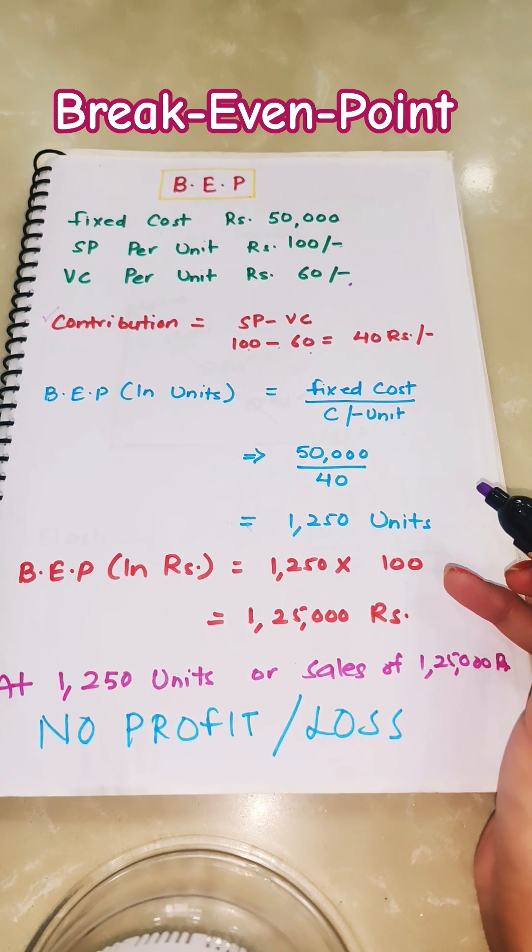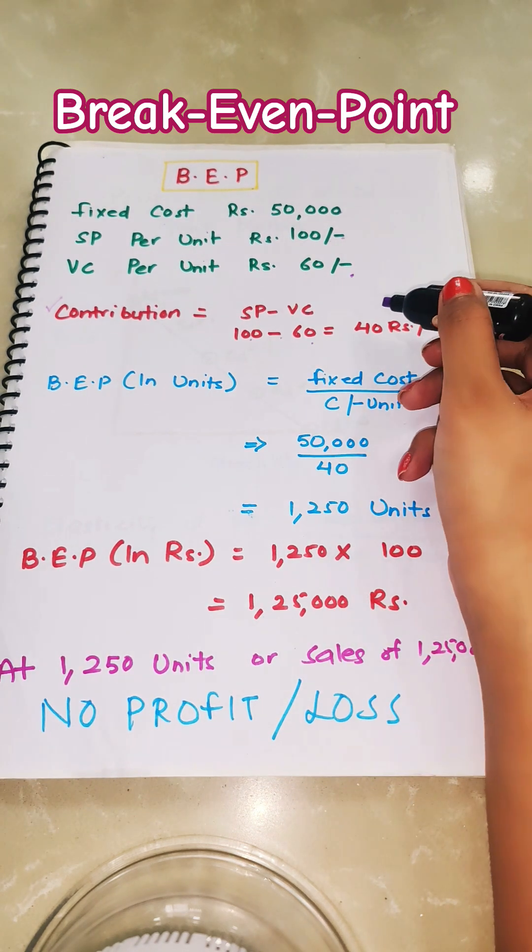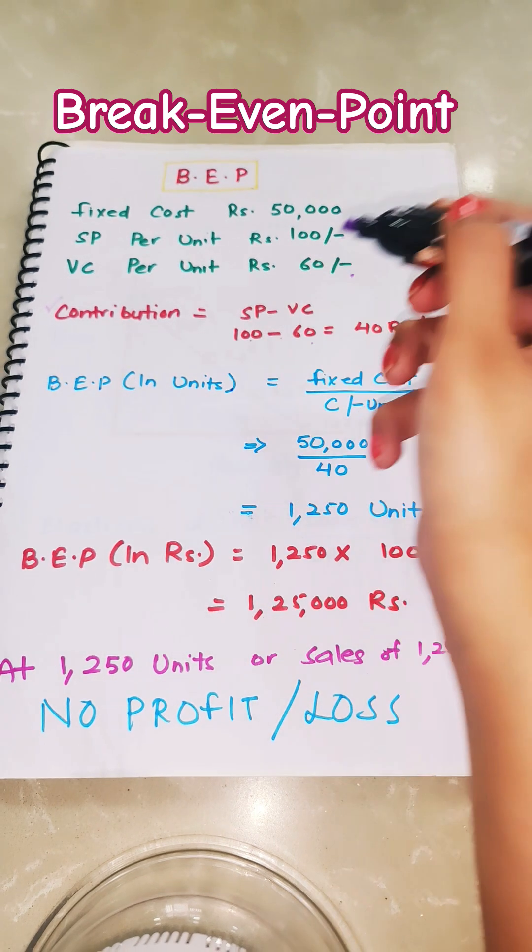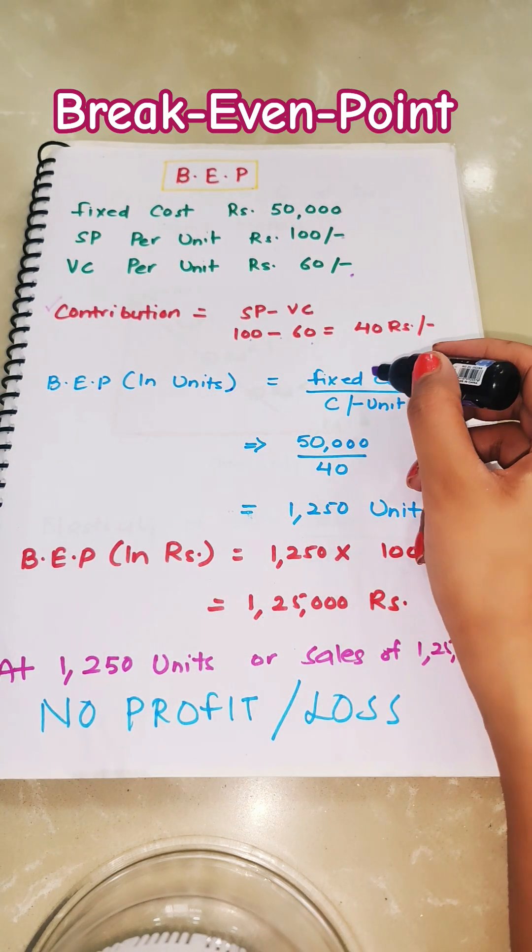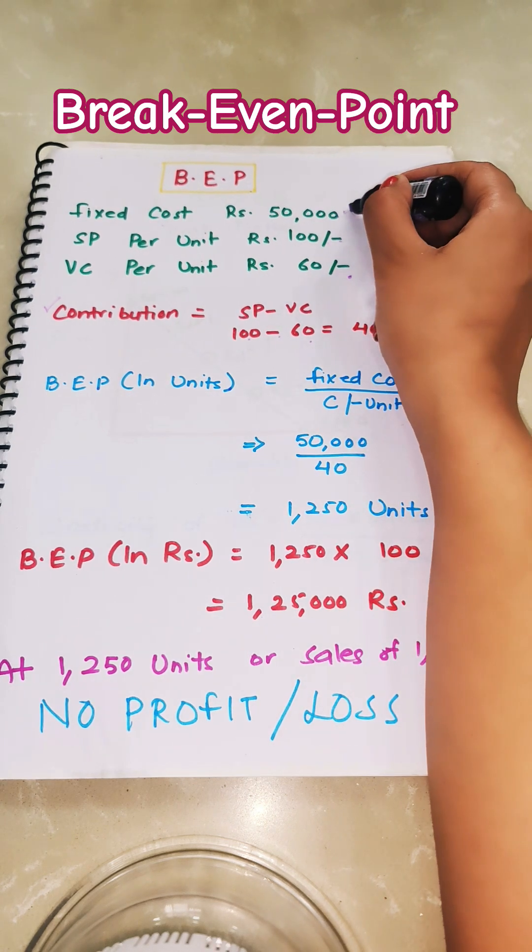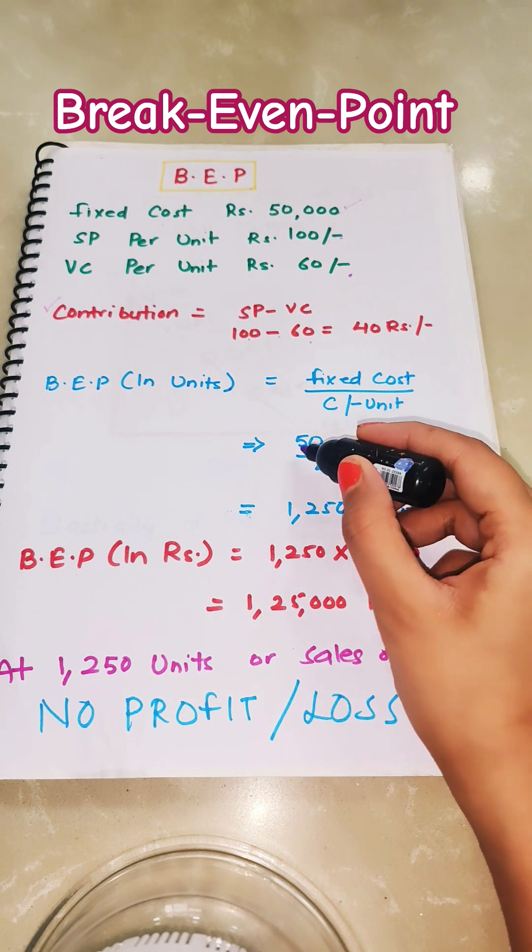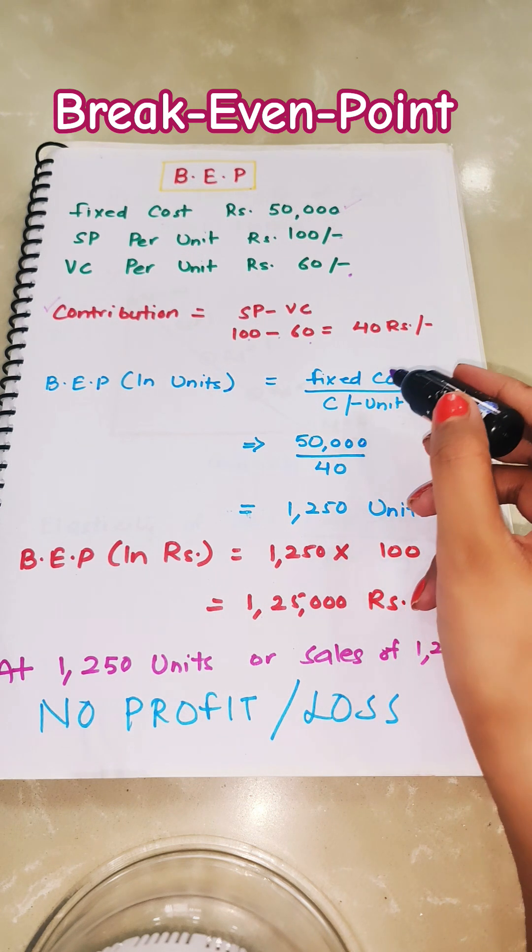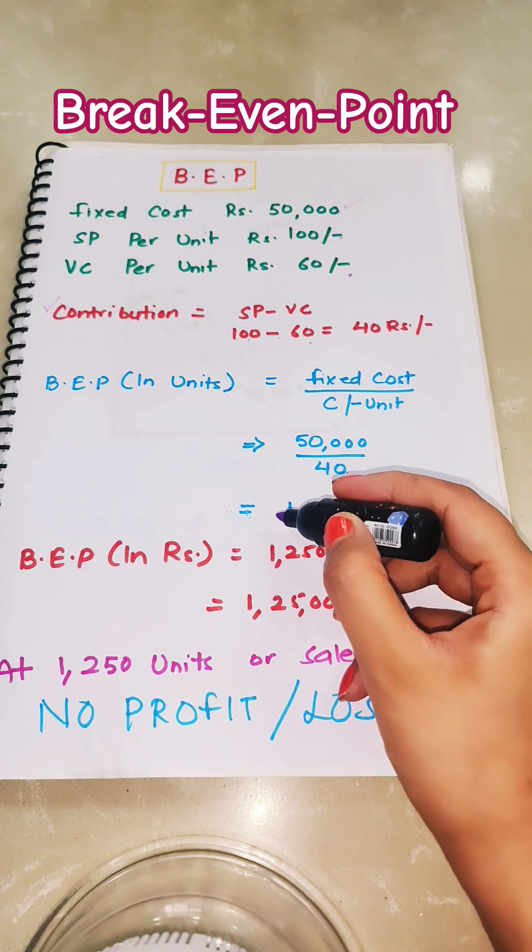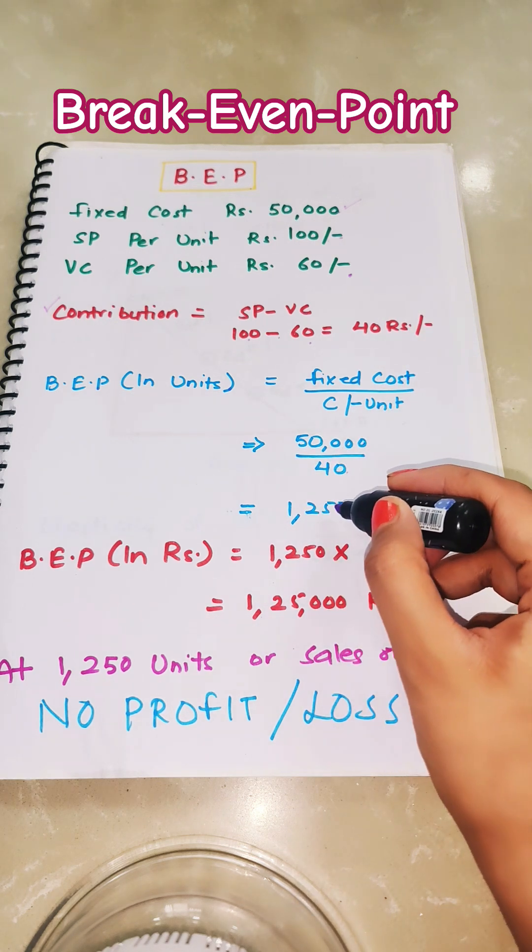Now we can use the contribution we calculated to find break-even point in units. The formula for break-even point in units is fixed cost divided by contribution per unit. Fixed cost is Rs. 50,000 divided by contribution per unit Rs. 40. So break-even point in units comes out to be 1,250 units.